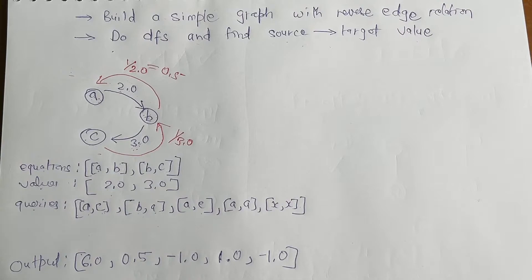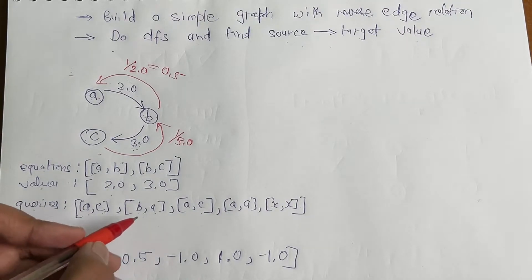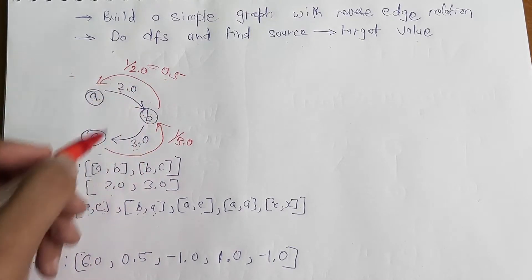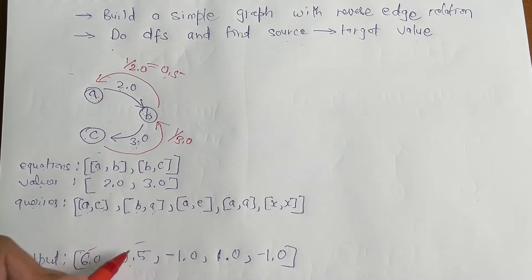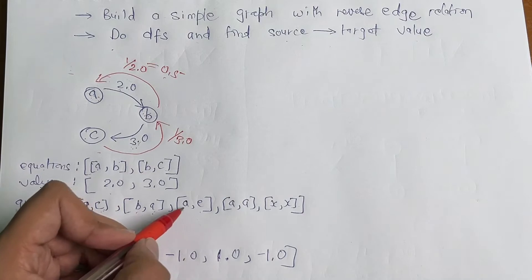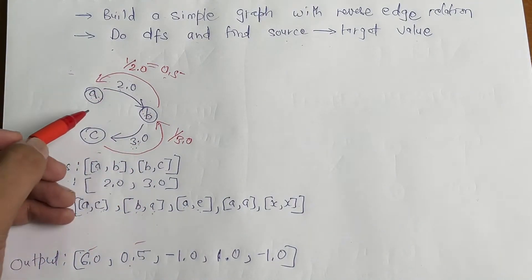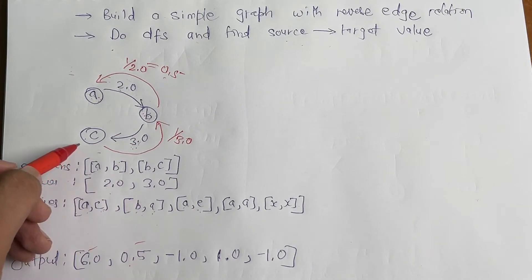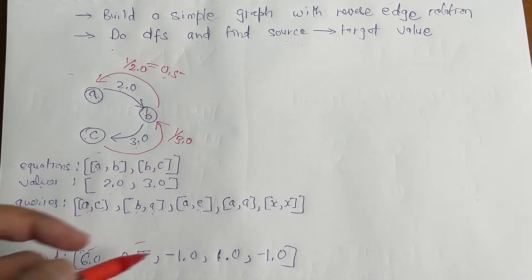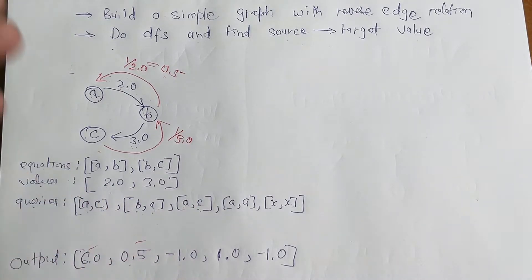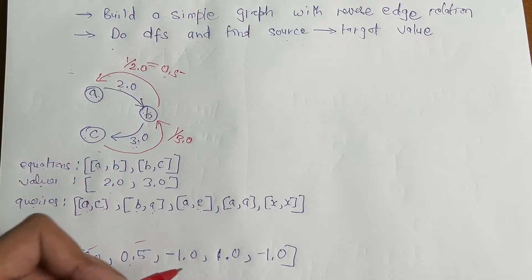For the query b→a, the answer is 0.5 as seen in the graph. For query a→e, since e is not present in our graph, the DFS will search through the entire graph, fail to find target e, and return -1. We will see in the code how we return -1 when the target is not found.